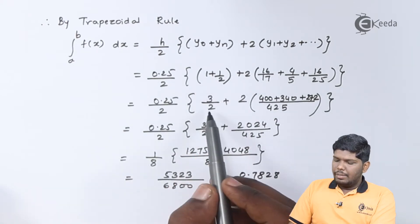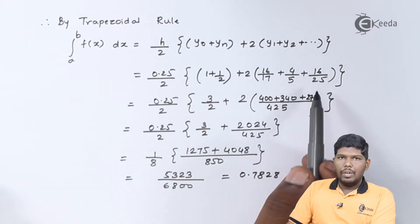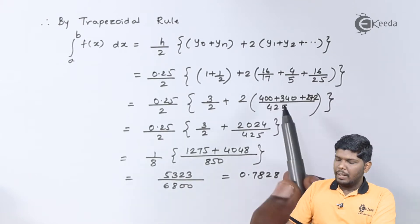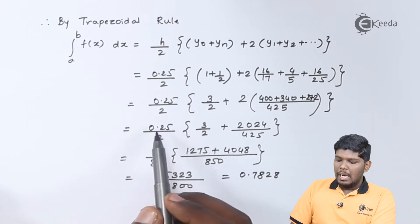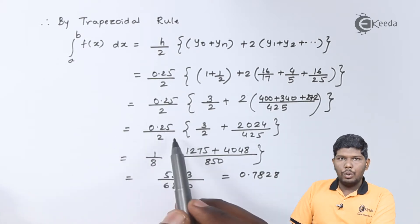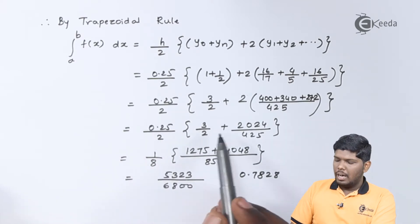On solving these two fractions, we have 3 by 2 plus, here we have taken the LCM of 425. And adding these three terms, we will get 2024. Now, 0.25 can be written as 1 by 4 and that 1 by 4 into 2 will give you 1 by 8.